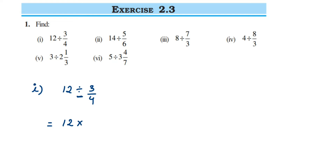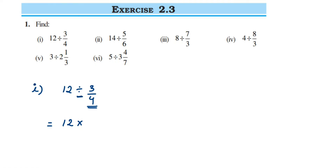Now this division will become multiplication. We're going to take a reciprocal of the second number. If you don't know what reciprocal is — reciprocal means you have to interchange the numerator and denominator. So for 3/4, the reciprocal will be 4/3. For example, if you have 5/7, its reciprocal will be 7/5. So when doing division of fractions, the first number remains the same, and instead of division we multiply with the reciprocal of the second number.